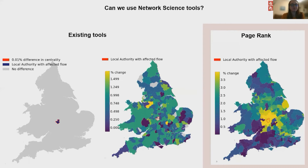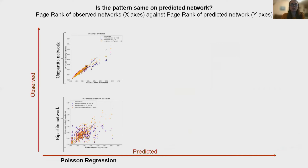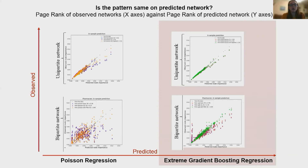We can then use Patriot to compare the interaction structure of the observed network and the predicted network. With this approach, we found that traditional modeling approaches such as Poisson regression seem to be very effective in replicating patterns of simple networks, but are not very good at replicating patterns of networks with specific topology. Interestingly, this is not the case for machine learning approaches, which are very effective in replicating patterns for all types of networks.